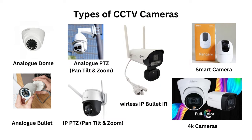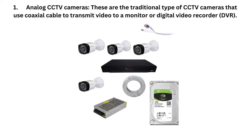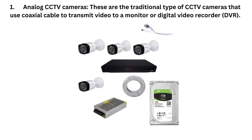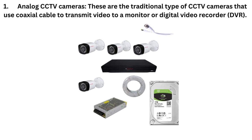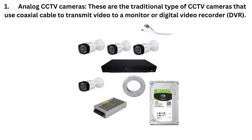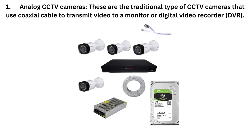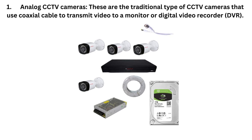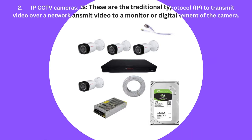There are several types of CCTV cameras, each with their own unique features and characteristics. Some common types include: 1. Analog CCTV cameras — these are the traditional type of CCTV cameras that use coaxial cable to transmit video to a monitor or digital video recorder.